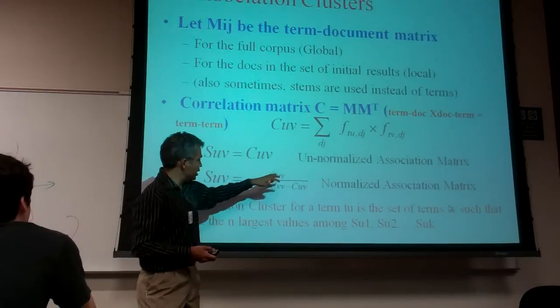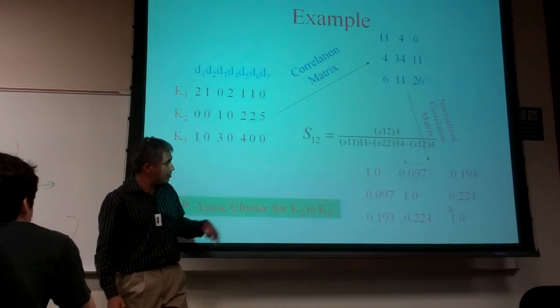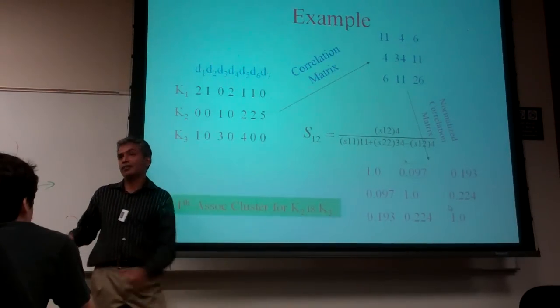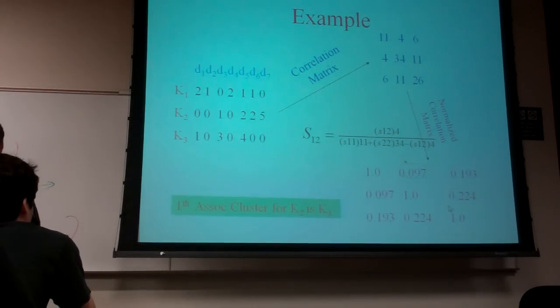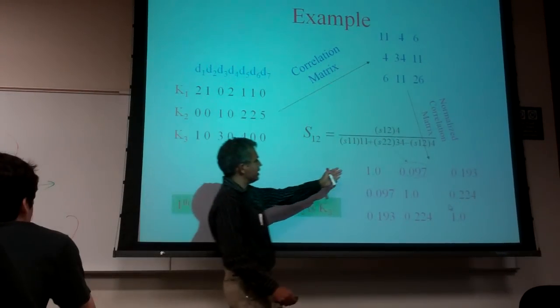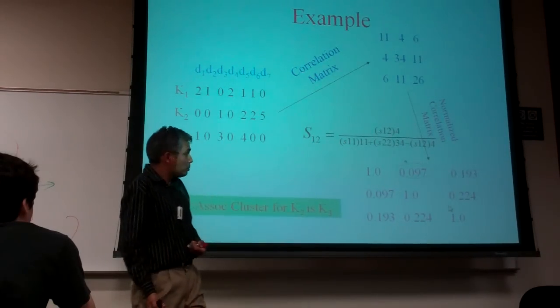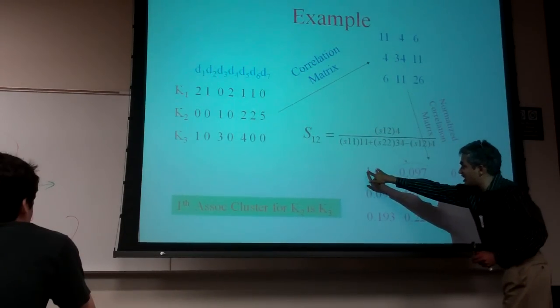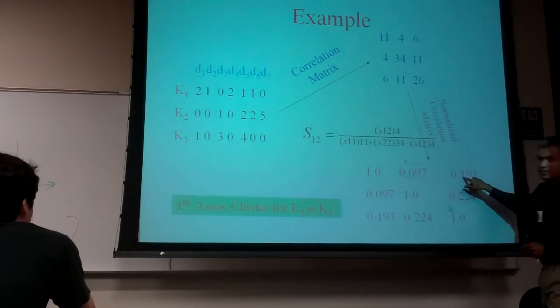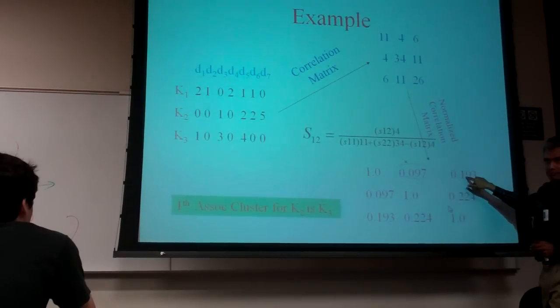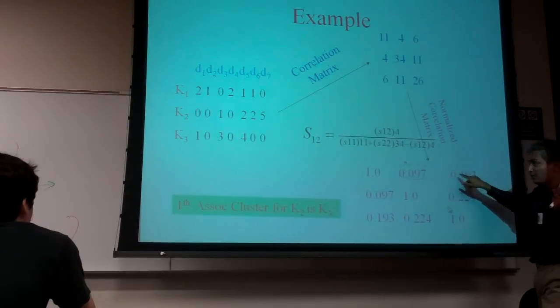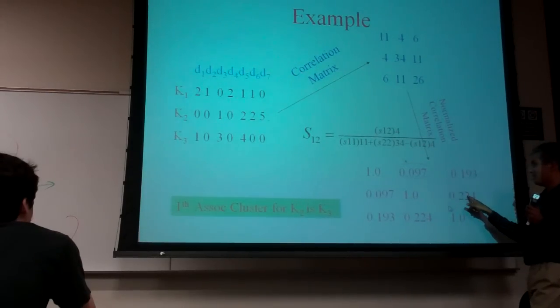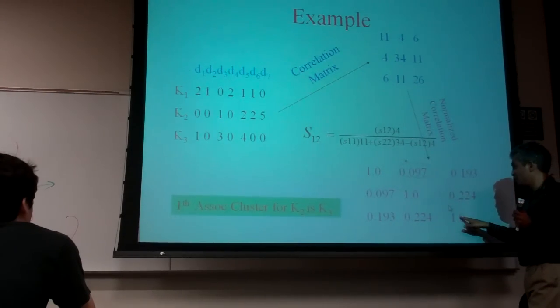So if I do cuv by cuu plus cvv minus cuv, for this, you can go back and look at it, I'll get this matrix. Here, essentially, everything is 1, 1, 1. And in this particular case, it so happens that the most closest element to this term is still this. So if I'm looking for one most similar element to t1, I would think this. And one most similar element to this guy, I'll think this. One most similar element to this guy, I'll think this.